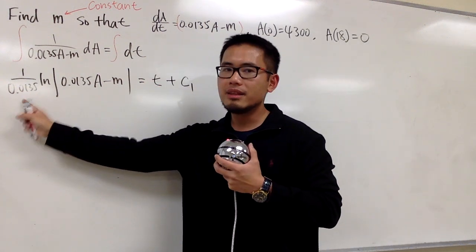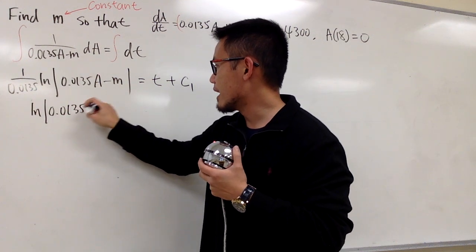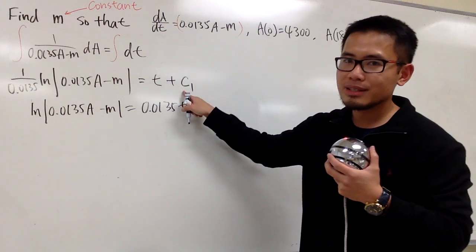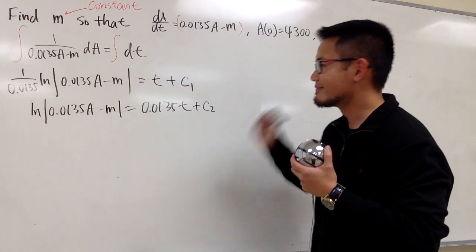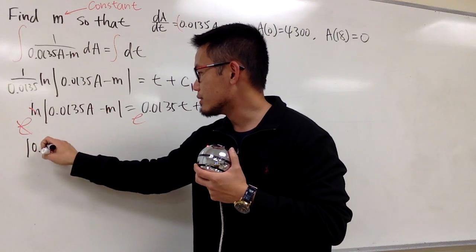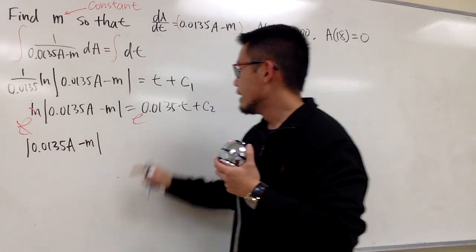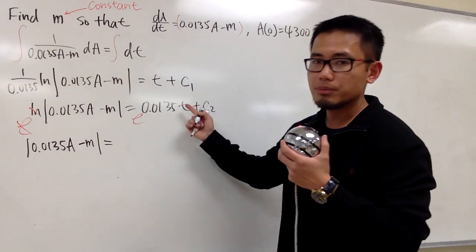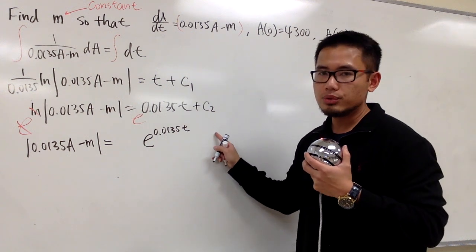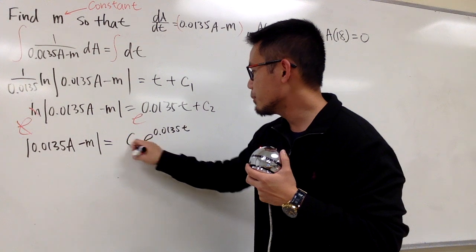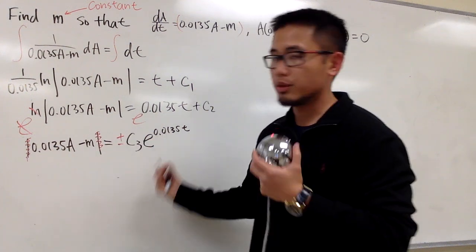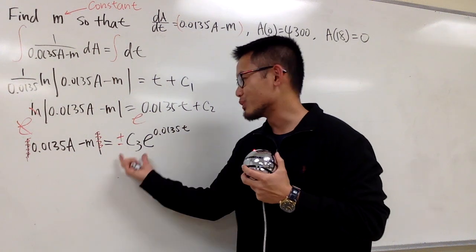Now let's multiply both sides by 0.0135, so we have ln|0.0135A minus M| equals 0.0135T plus c2, where c2 is a constant. Next, let's raise e to both sides so the ln cancels. We get the absolute value of (0.0135A minus M) equals c3 times e to the 0.0135T. To remove the absolute value, we put a plus-minus on the right-hand side, and since c3 and negative c3 are both constants, we label that as c4.